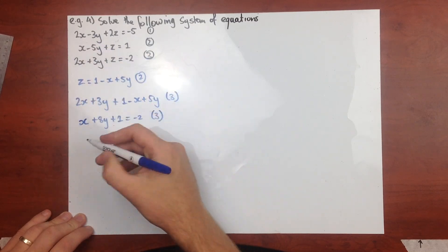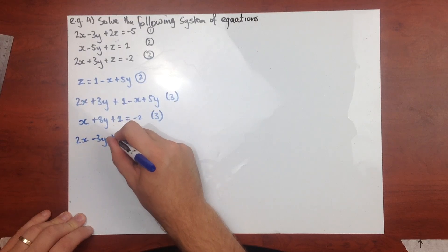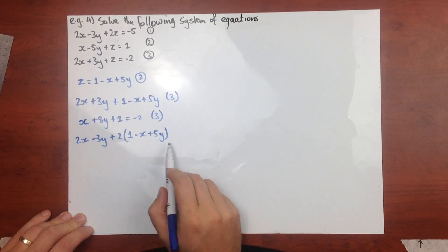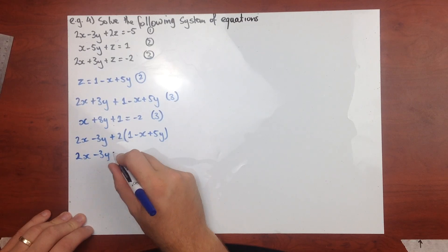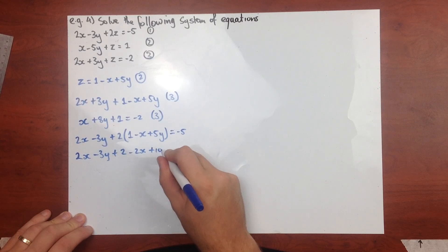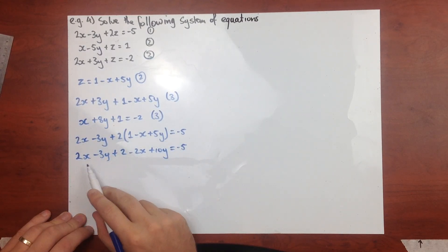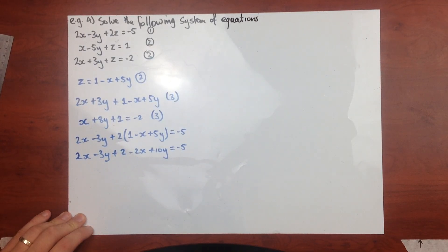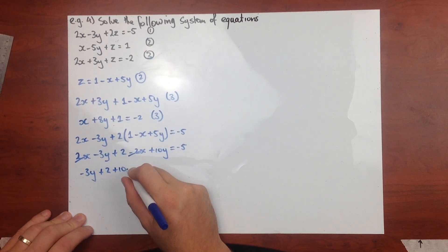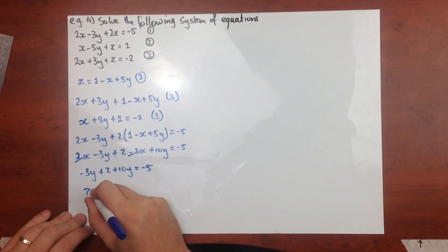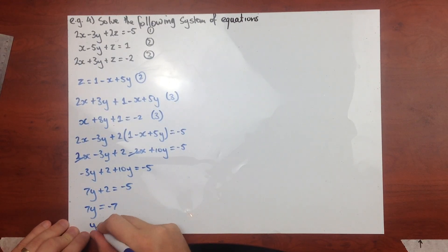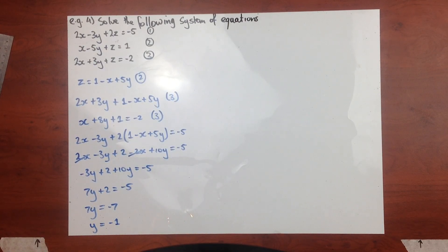Substituting z into equation one gives 2x minus 3y plus 2 times (1 minus x plus 5y) equals negative 5. Expanding: 2x minus 3y plus 2 minus 2x plus 10y equals negative 5. The x terms cancel out completely, leaving 7y plus 2 equals negative 5, so 7y equals negative 7, giving y equals negative 1.